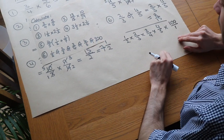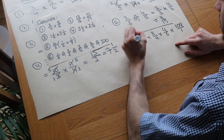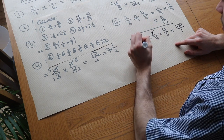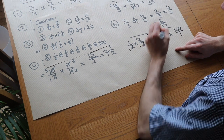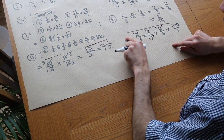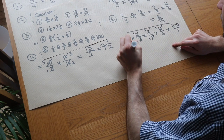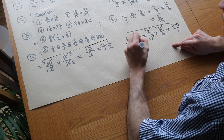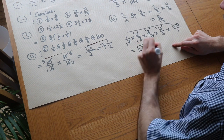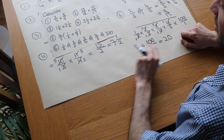We can cross-cancel extensively: the 2s cancel to 1s, the 3s cancel to 1s, the 4s cancel to 1s. All that's left on top is 1 times 1 times 1 times 1 times 100, and on the bottom 1 times 1 times 1 times 5 times 1, which is 5. So 100 over 5 is just 20.